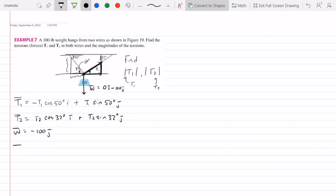Because this thing is in equilibrium, it's not moving, then T1 plus T2 plus w is all equal to the zero vector, which means if you add up the x components and the y components, they should all equal zero.